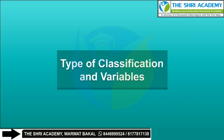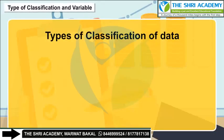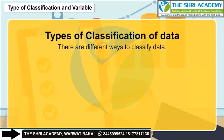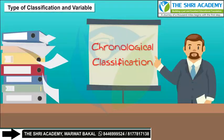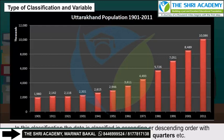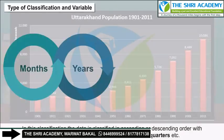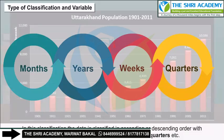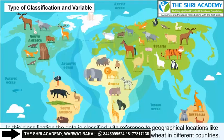Types of classification and variables. There are different ways to classify data. Chronological classification: in this classification, the data is classified in ascending or descending order with reference to time, like months, years, weeks, quarters, etc.